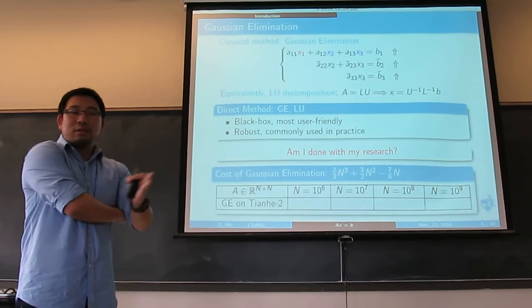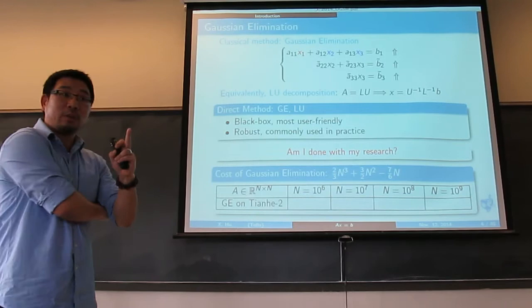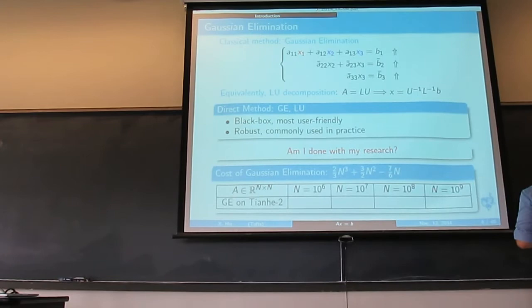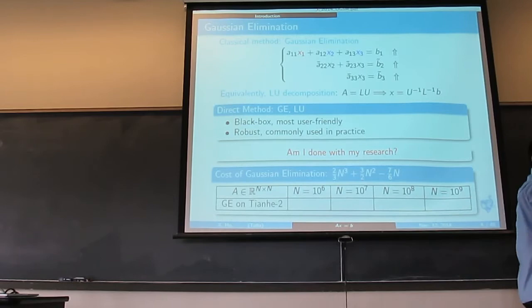Suppose I do my Gaussian elimination on Frontier — that's the biggest supercomputer in the world now, the number one computer. The peak performance for that one is 54 petaflops every second.